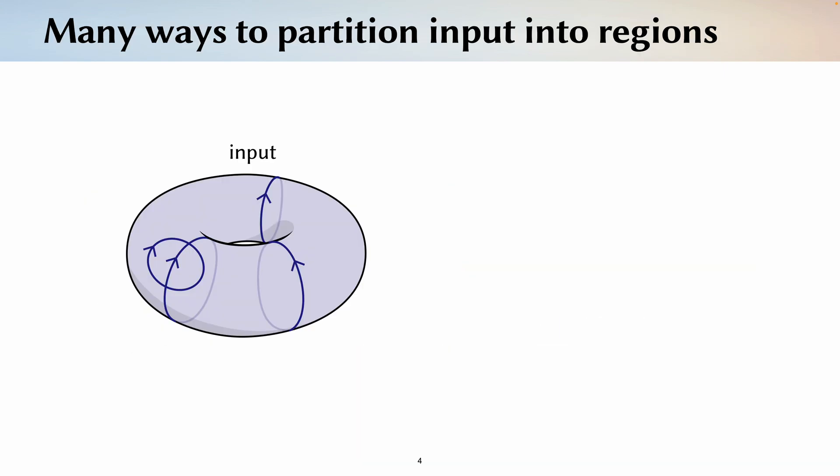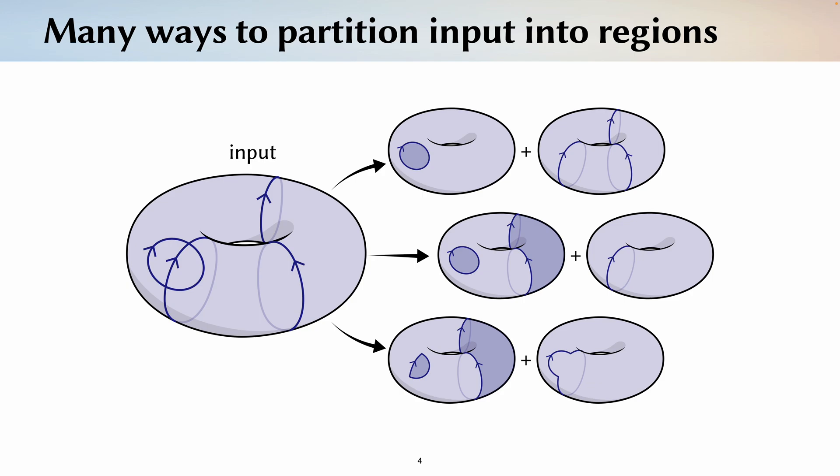Second, our problem is difficult because there are many ways to partition the input into regions. For example, you might look at this input and think to decompose the curve this way into bounding and non-bounding parts. But this decomposition is also valid, and so is this one.